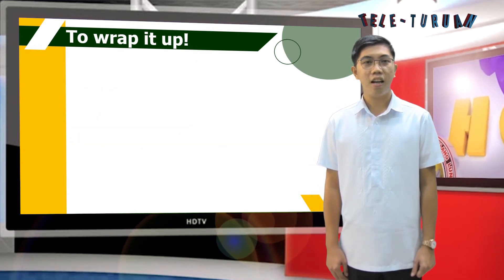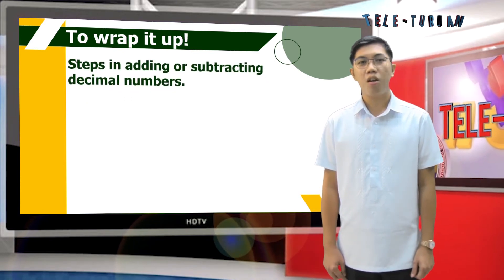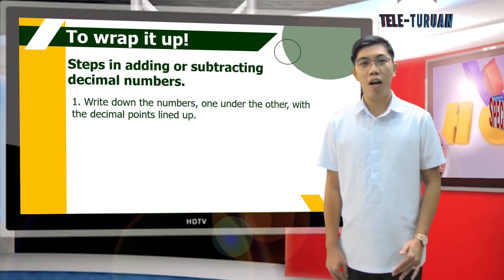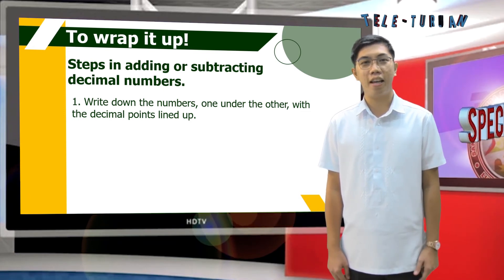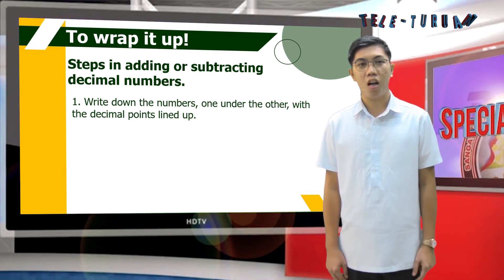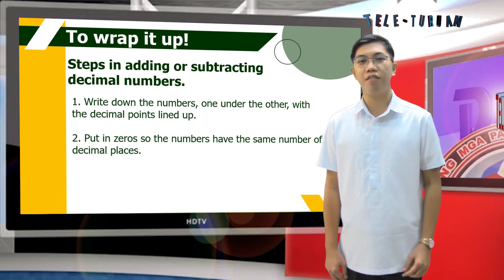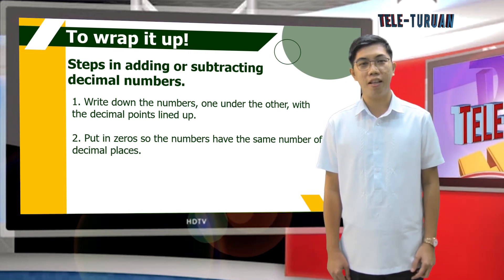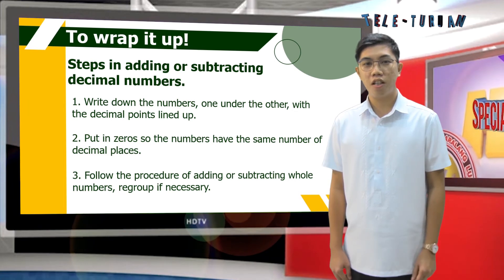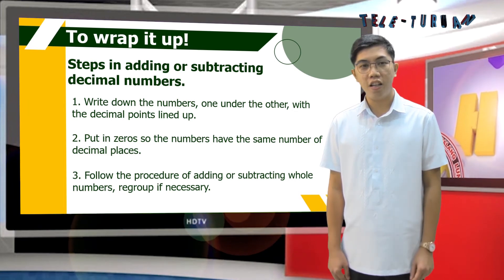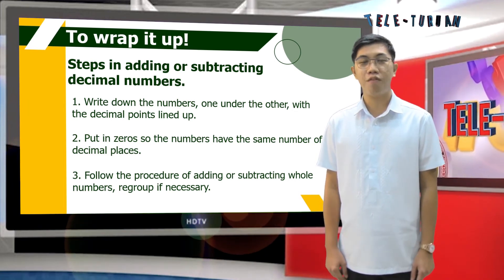Lastly, in adding and subtracting decimal numbers, write down the numbers one under the other with the decimal points lined up. Put in zeros so the numbers have the same number of decimal places. And follow the procedure of adding or subtracting whole numbers, regrouping if necessary.